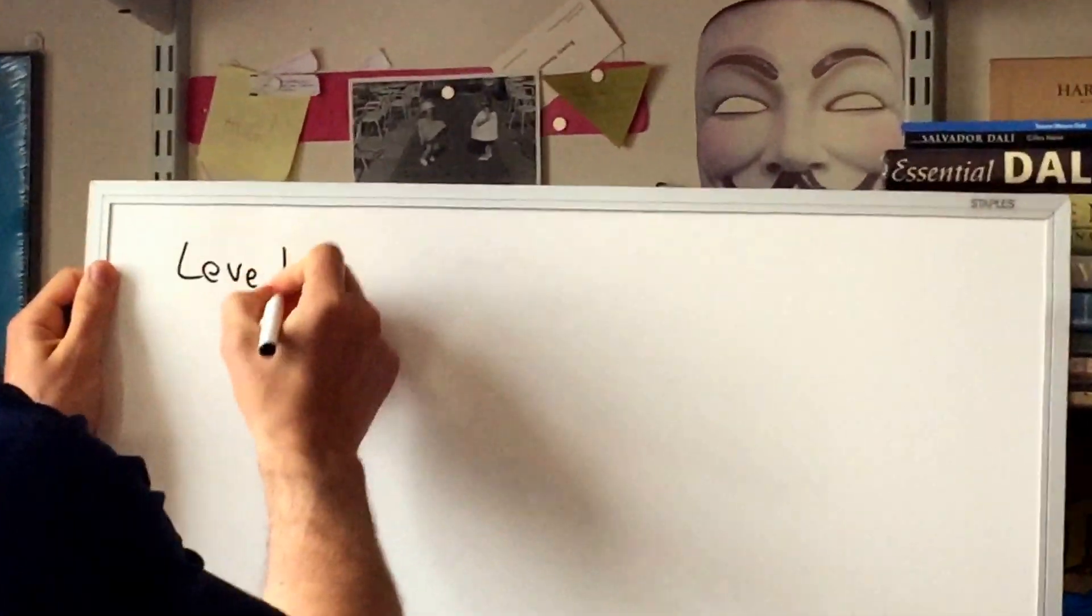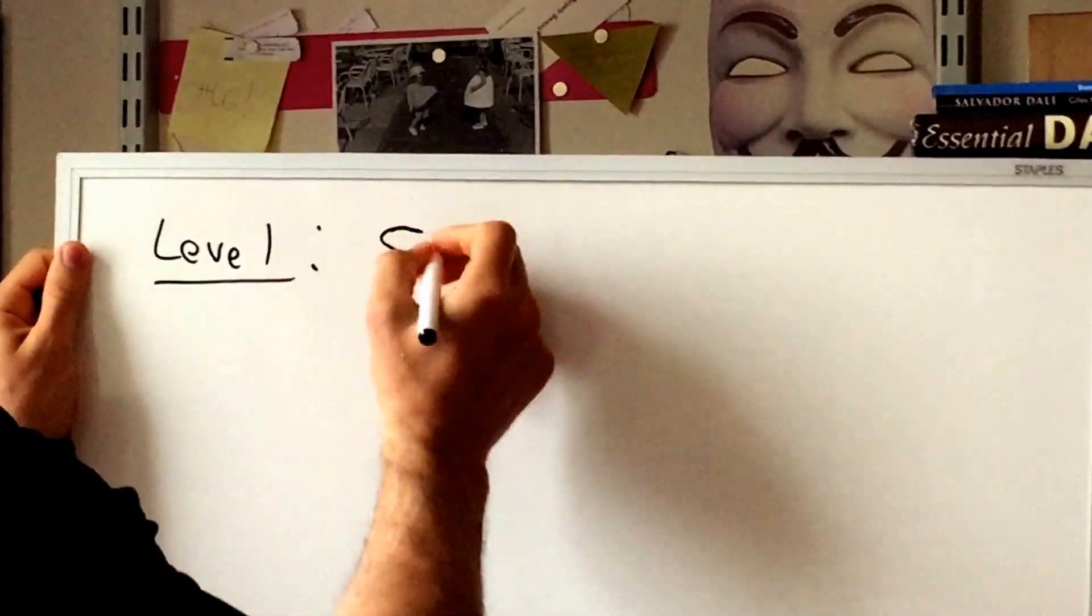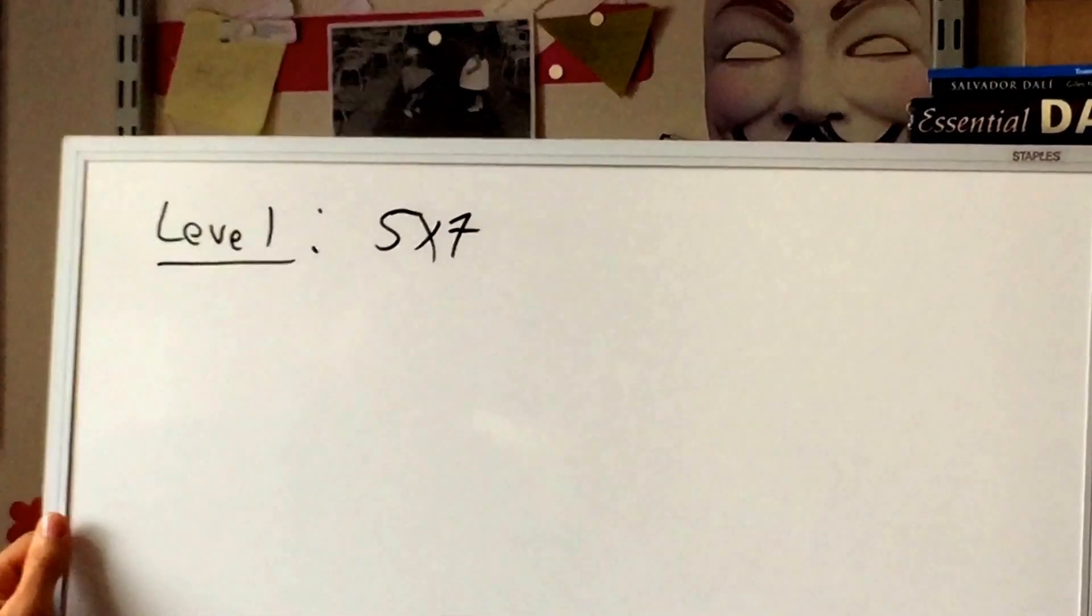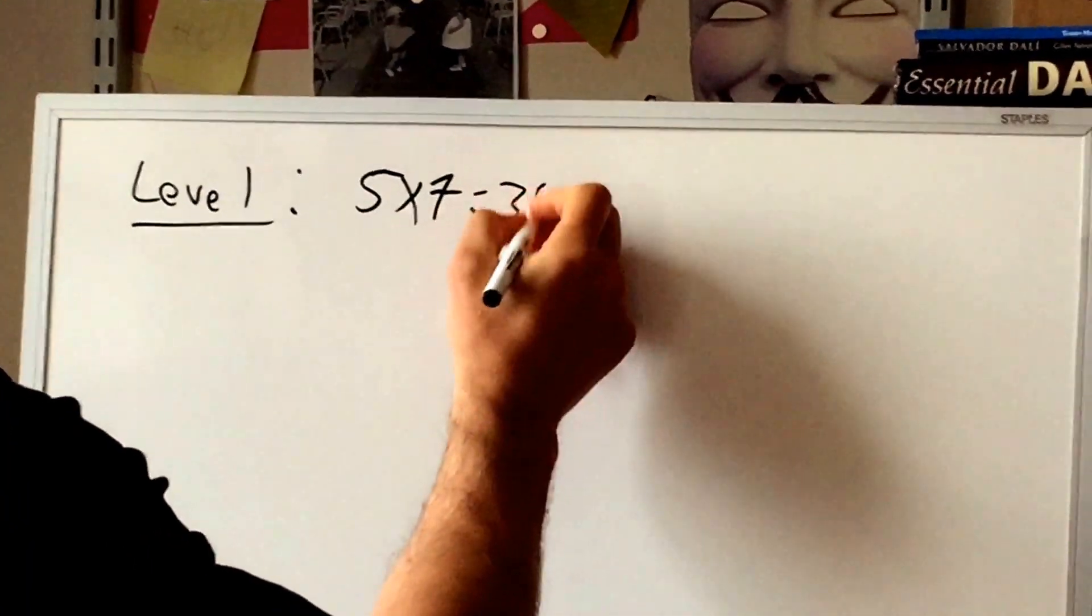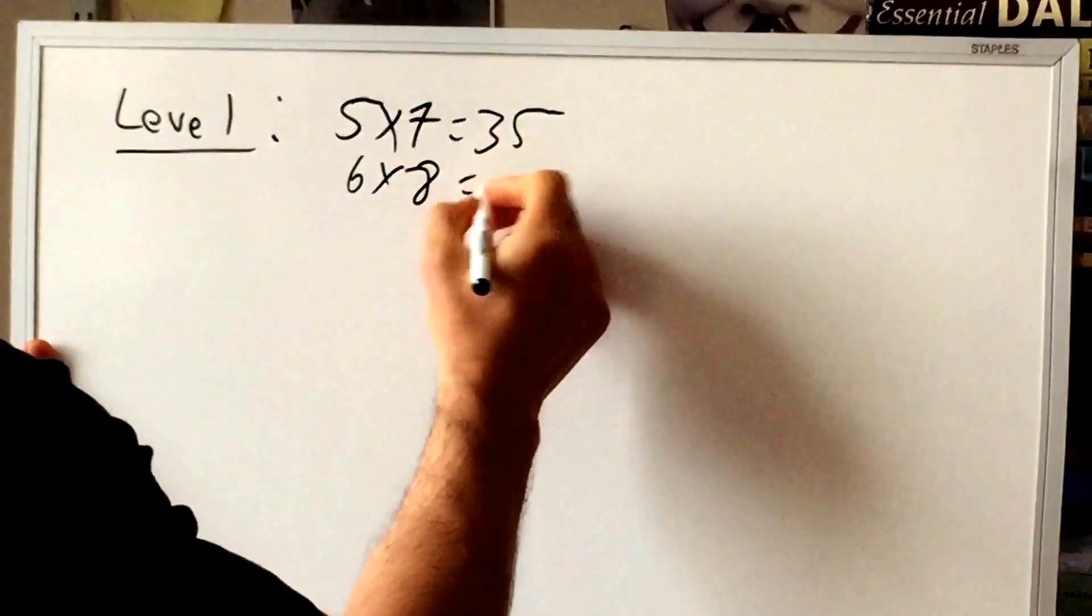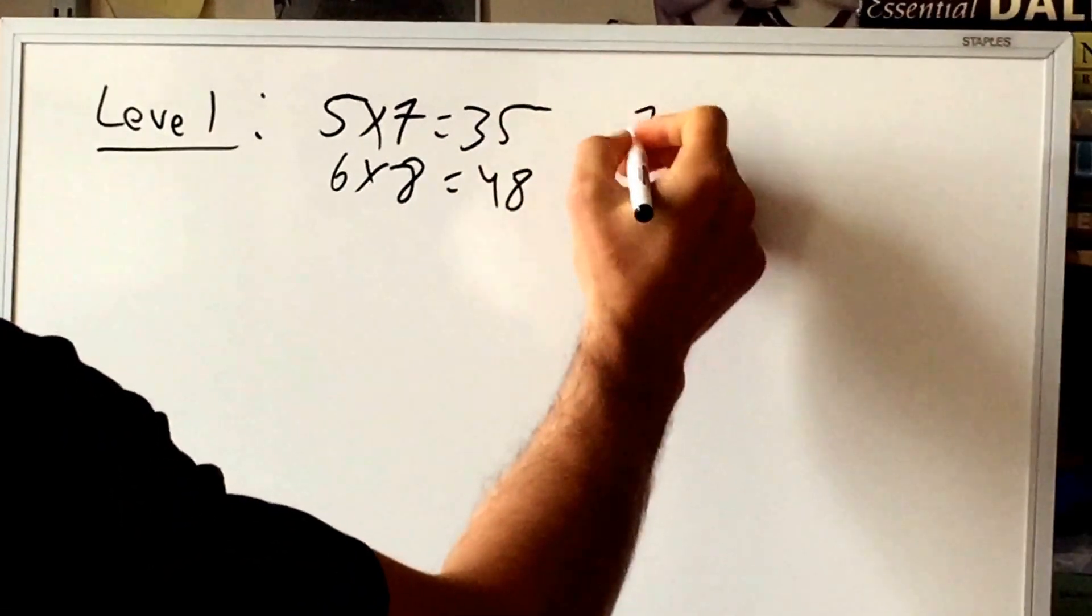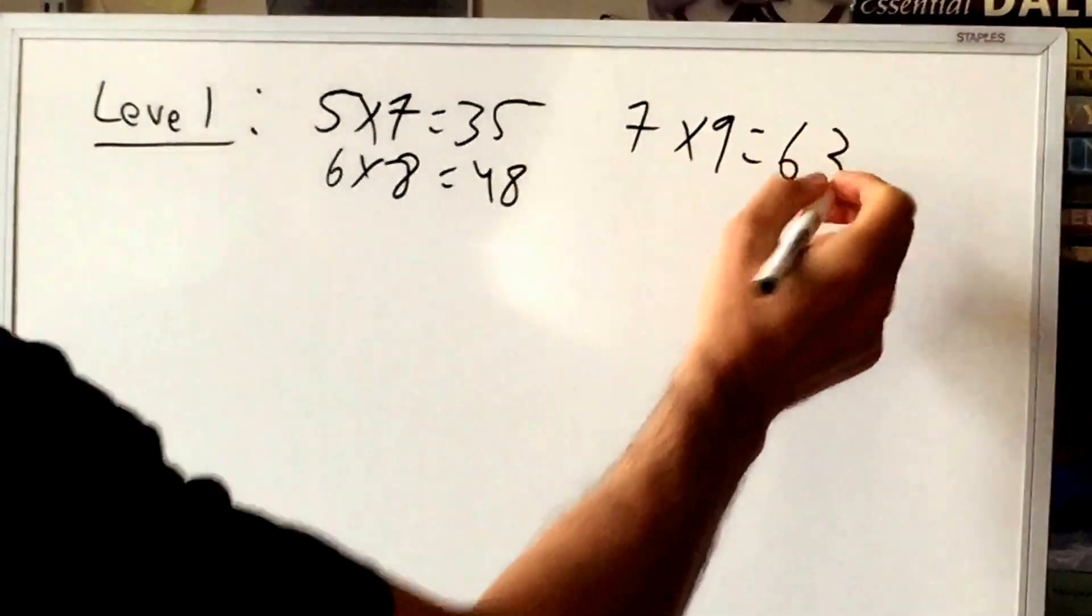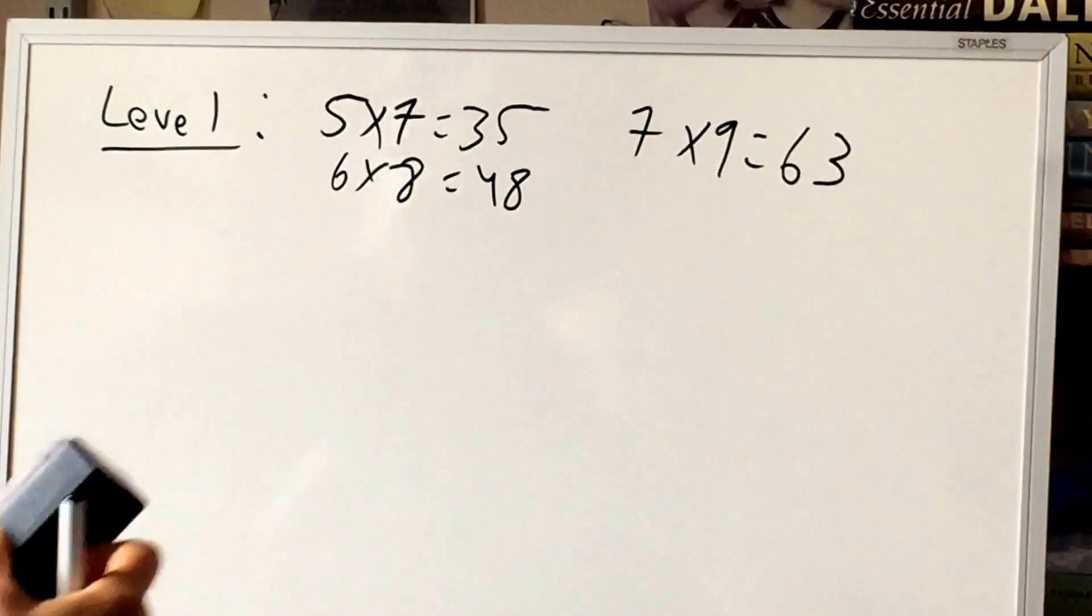So here's level one. Five times seven, okay, a lot of you got 35, great. Let's try six times eight, alright, too easy for you guys. Seven times nine, alright, 63, so this stuff is baby stuff. We get it.